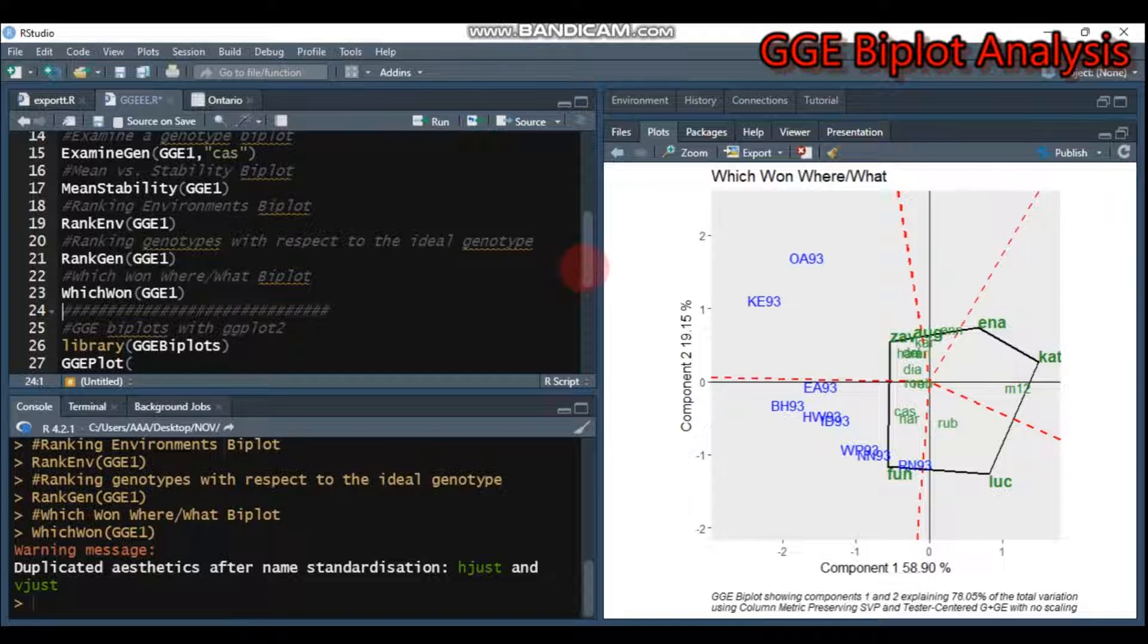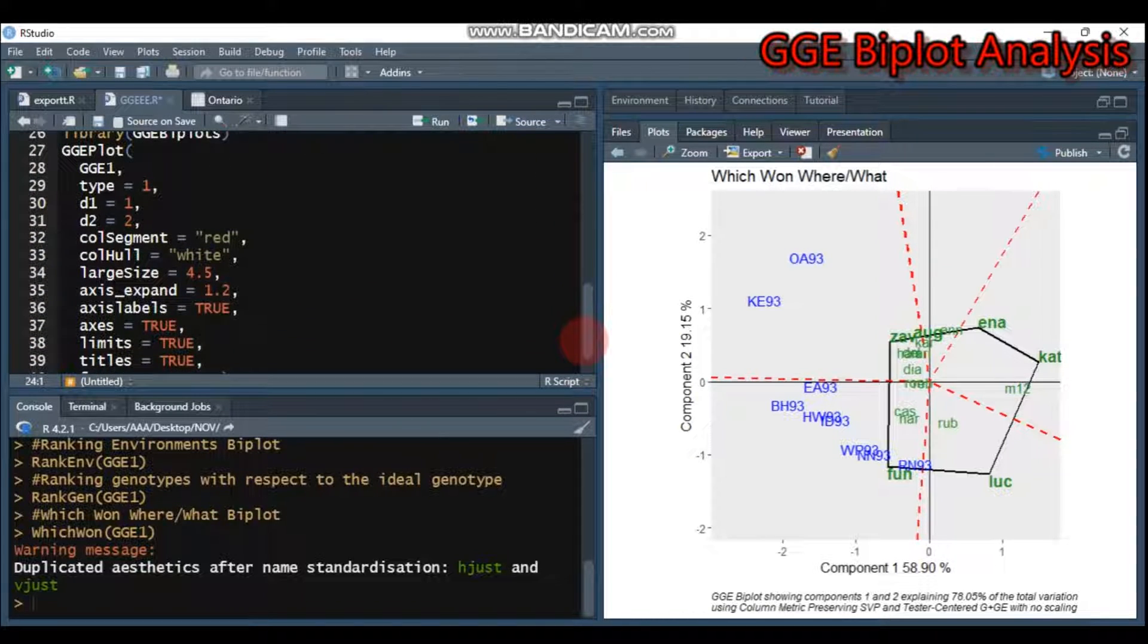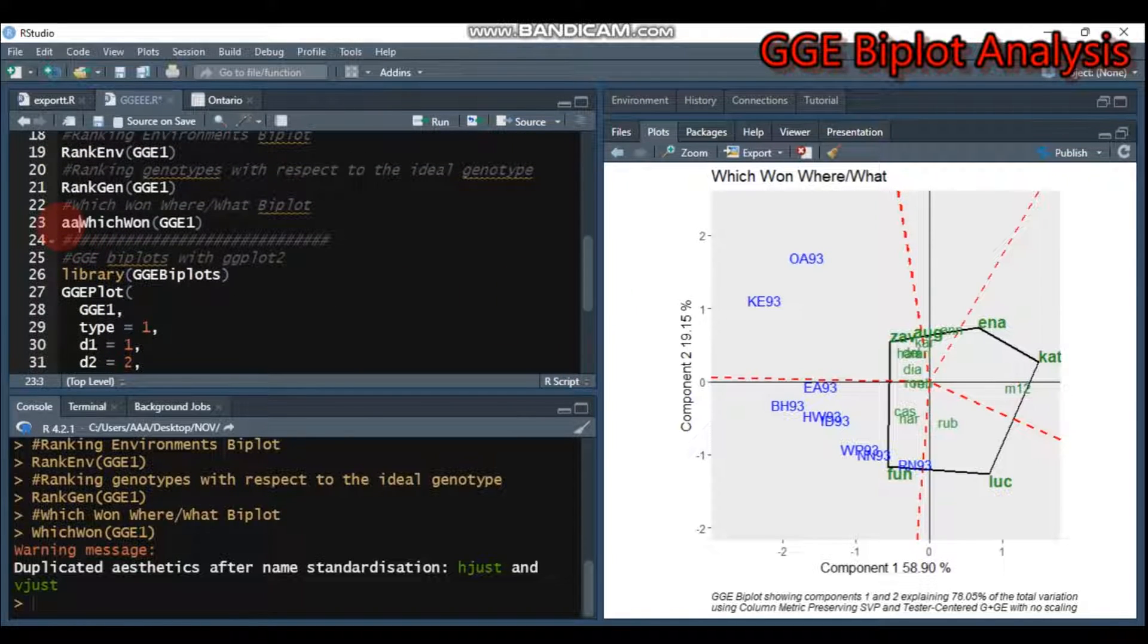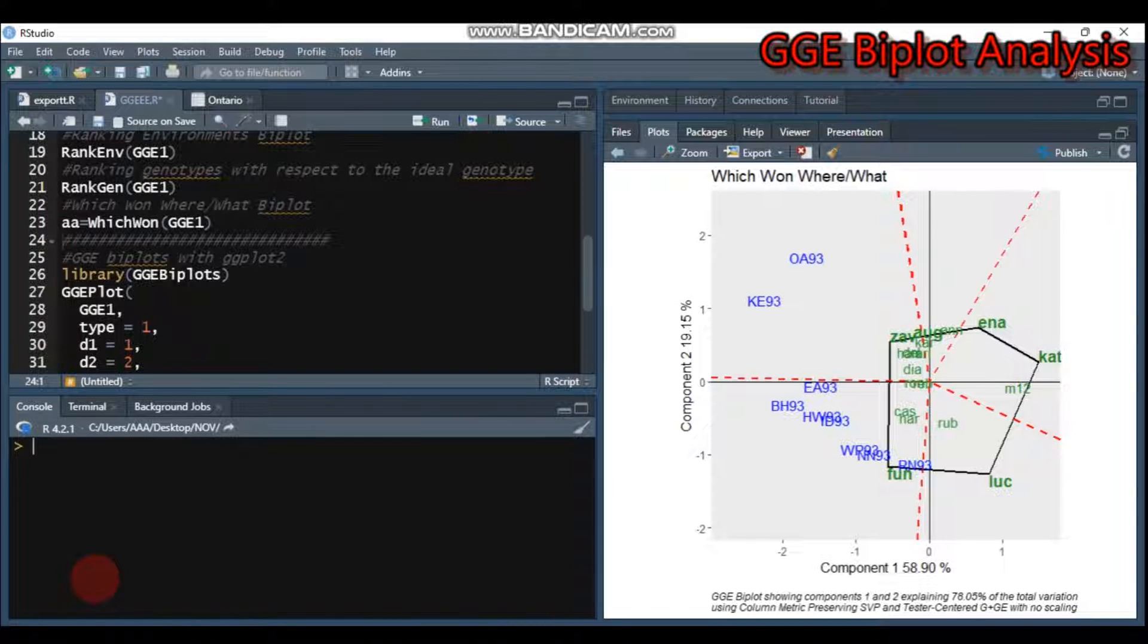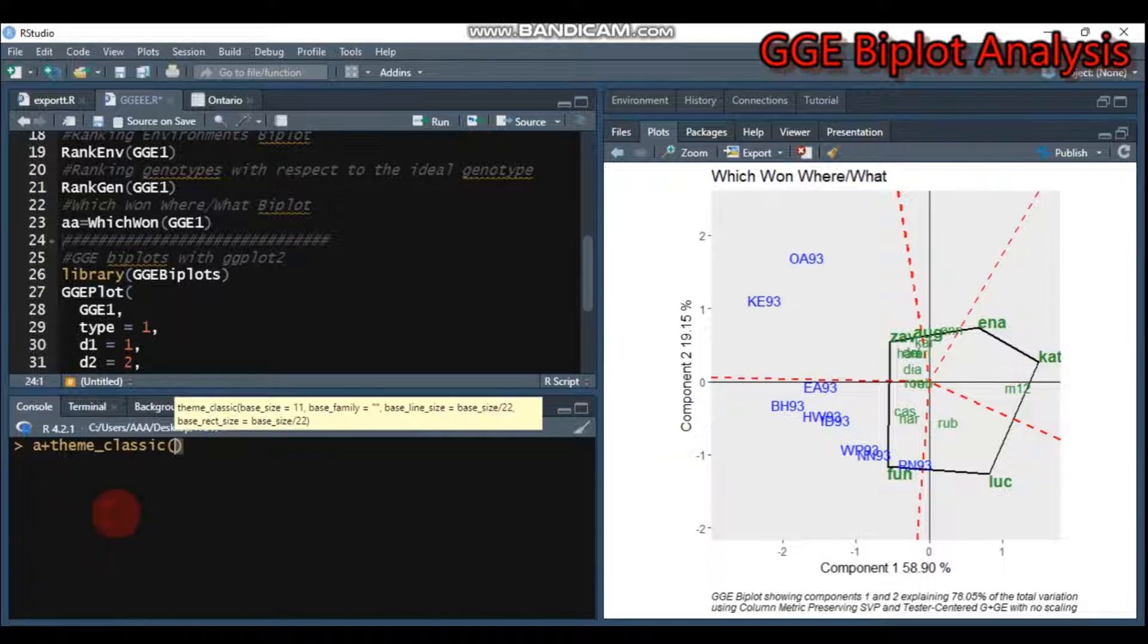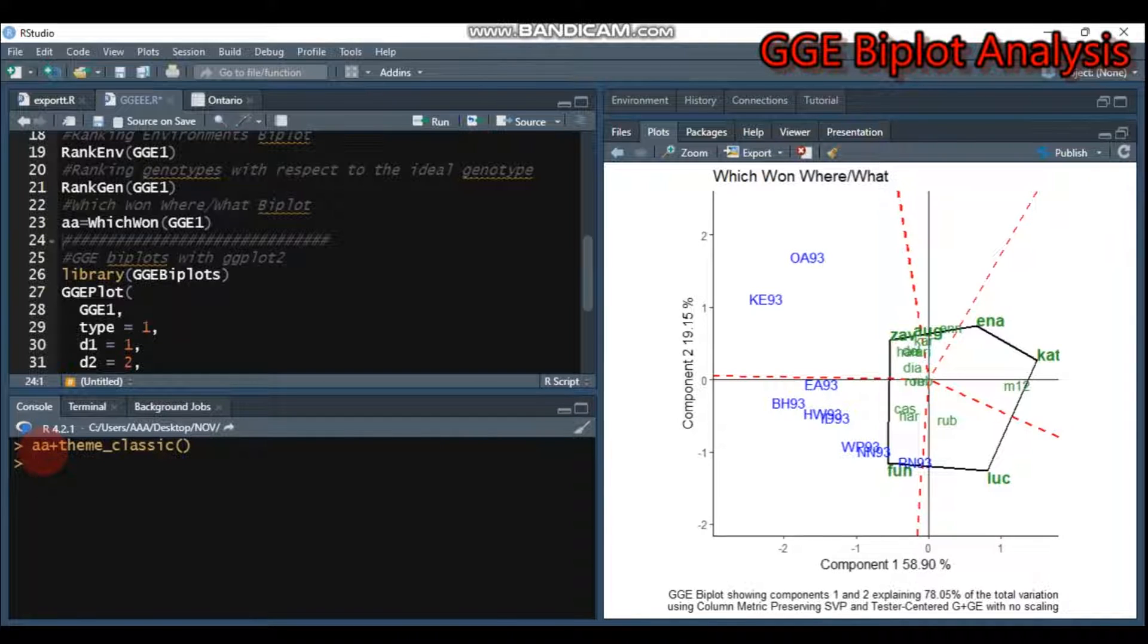Furthermore, if you want to customize or change the appearance of your plot, for example, let's assign here and add theme_classic to this. You can get such a beautiful or attractive biplot, but don't forget to call the ggplot function.